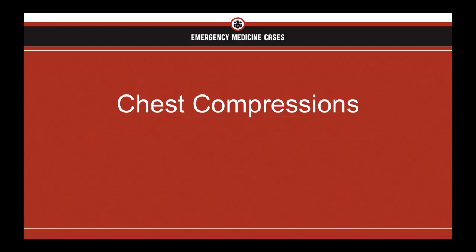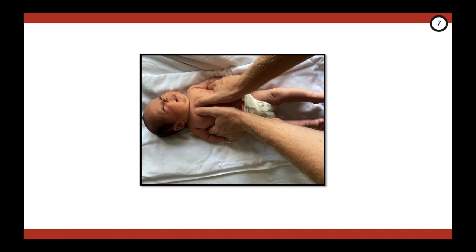Let's review chest compressions, because it's a little bit different than adults and children. Administer compressions from the head of the bed. The preferred technique is the two-thumb technique on the lower one-third of the sternum to a depth of about one-third of the chest diameter. The ratio is three to one, coordinated with positive pressure ventilation. So that's one and two and three and breathe. This will get you 120 events per minute. Now you've got to do 60 seconds of this until the next heart rate check.